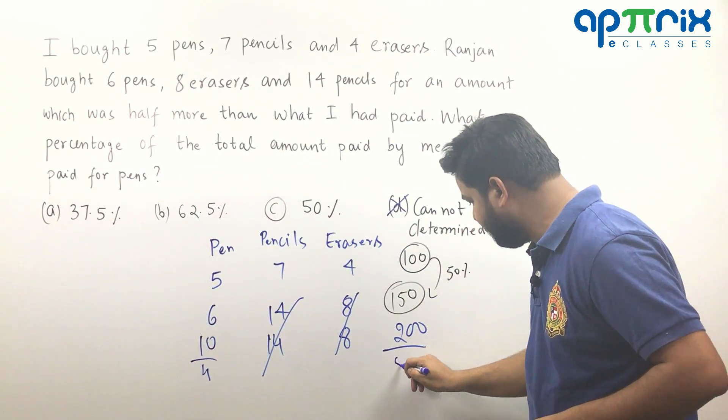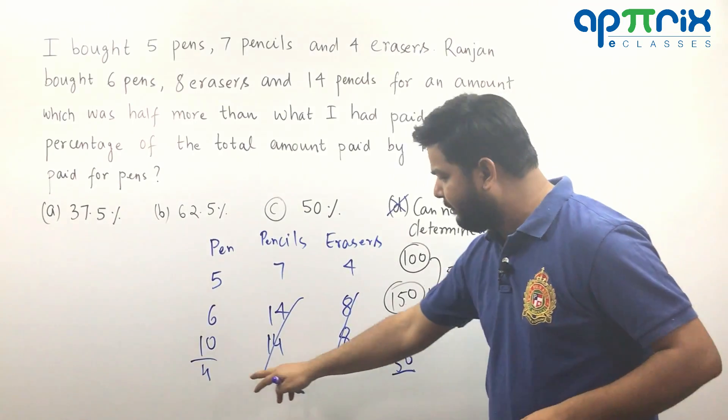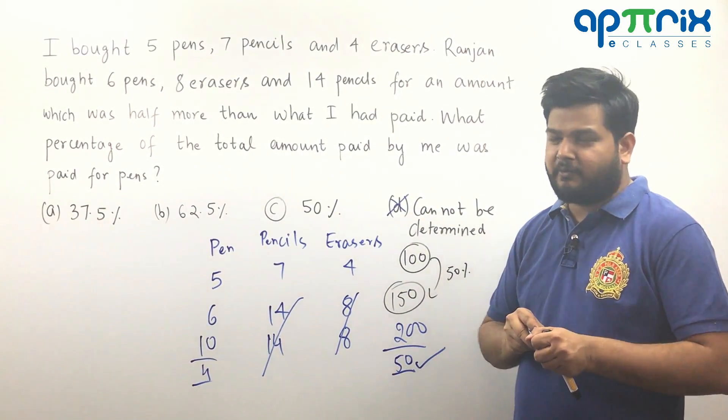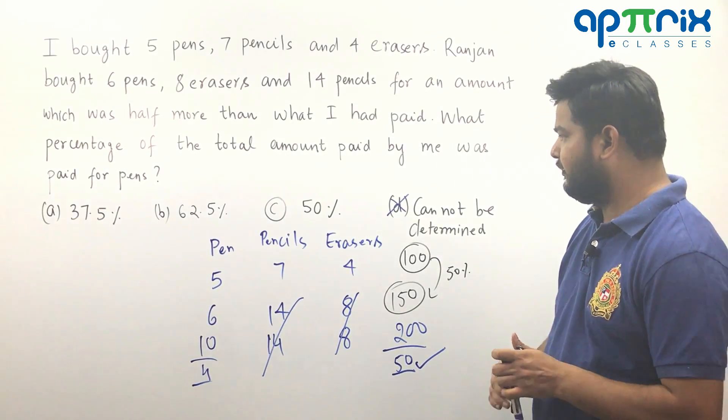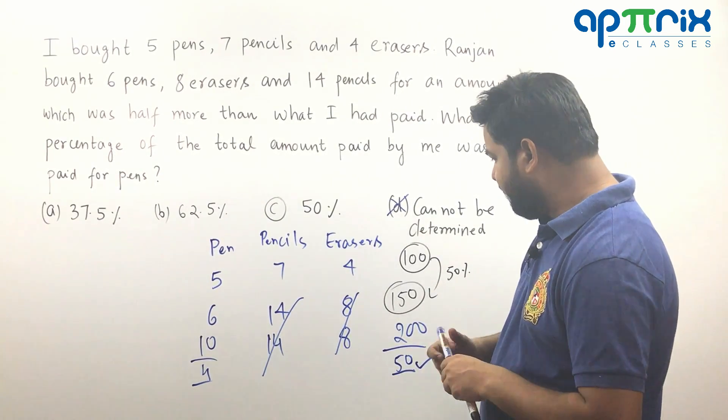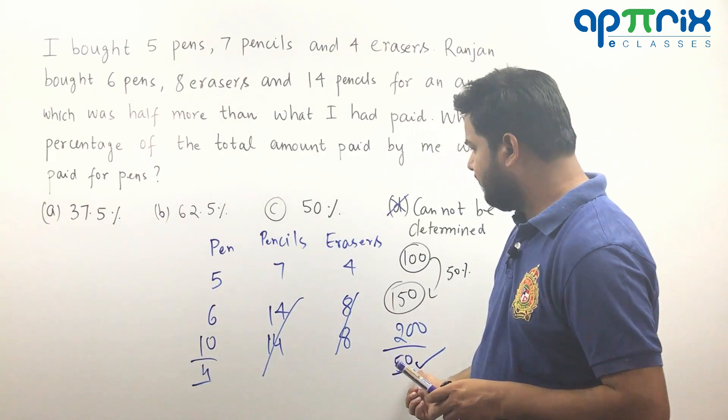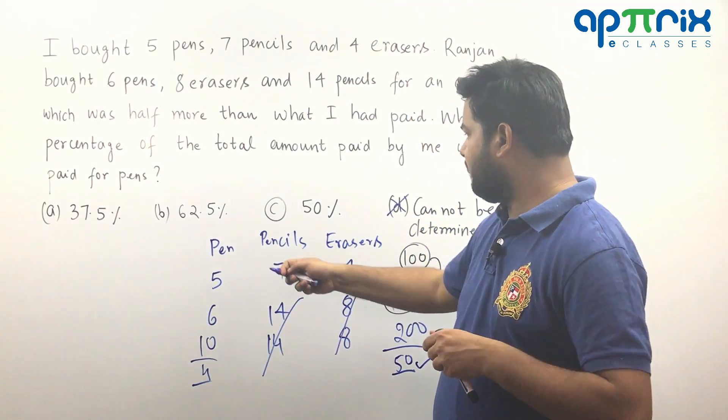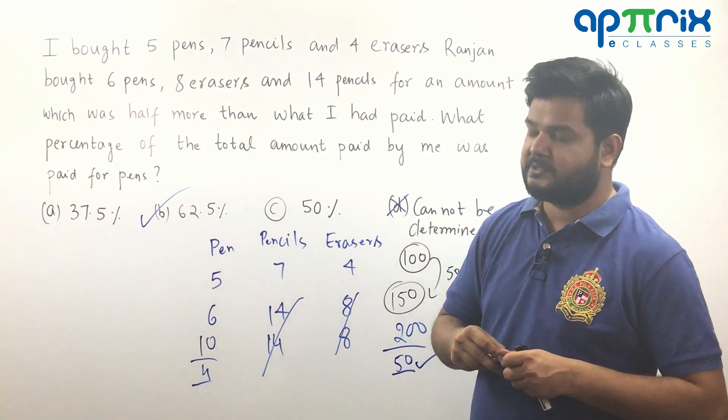Now are you going to waste any time to mark the answer? No. Why? Because if 4 pens cost is 50, the cost of 5 pens will be clearly more than 50 and there is only one option which can be correct. That is 62.5 percent.